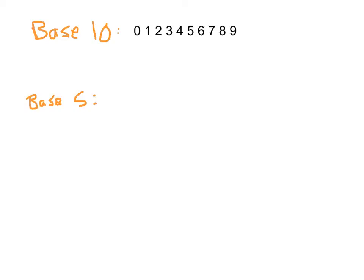We're used to seeing numbers in our base 10 system. Any number you see at the store or in a math problem, unless you're talking about different bases, is going to be in base 10. What we mean by that is we use the digits zero through nine — those are the single digits we use to create all of our numbers. In base 10, the columns go up by powers of 10.